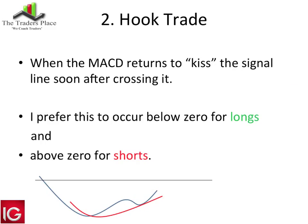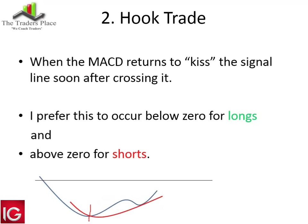The hook trade comes around a little more often but can be difficult to identify as it's occurring. How it works: the MACD returns to just kiss the signal line soon after the previous cross. The MACD crosses the signal line, moves higher, pulls back, and just touches the moving average — that is the hook trade. I want it to occur below zero for longs and above zero for shorts.